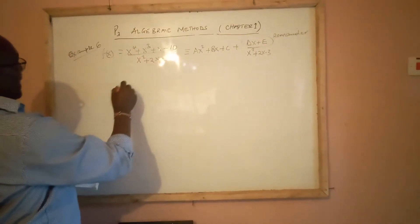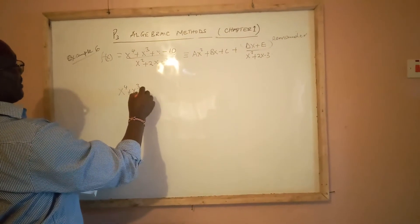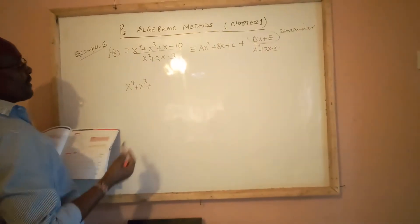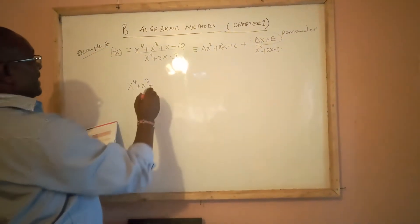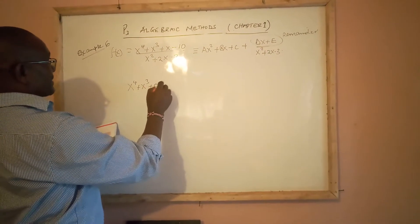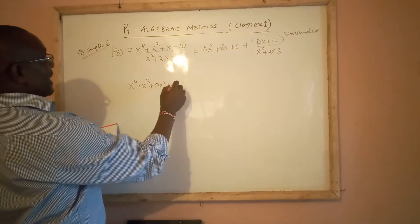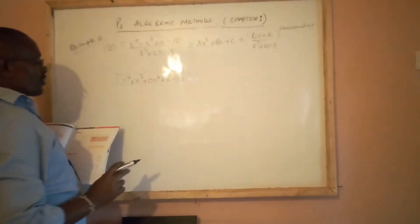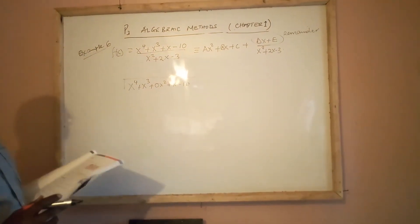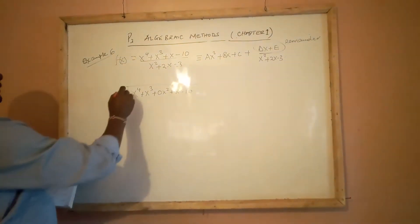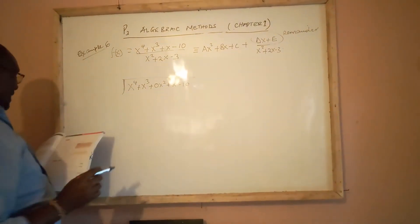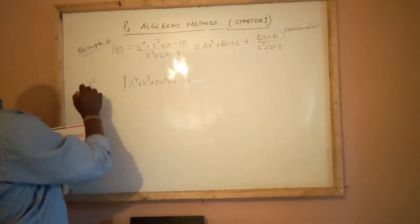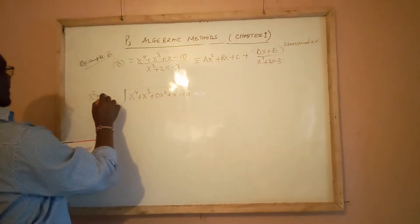we have x^4 + x^3, and of course you realize that there is no x^2, so we must bring it on when it is very empty. So, 0x^2 + x - 10. Please don't forget to introduce the index descending systematically, because if you forget that, you might get lost in your evaluation. All this divided by x^2 + 2x - 3.